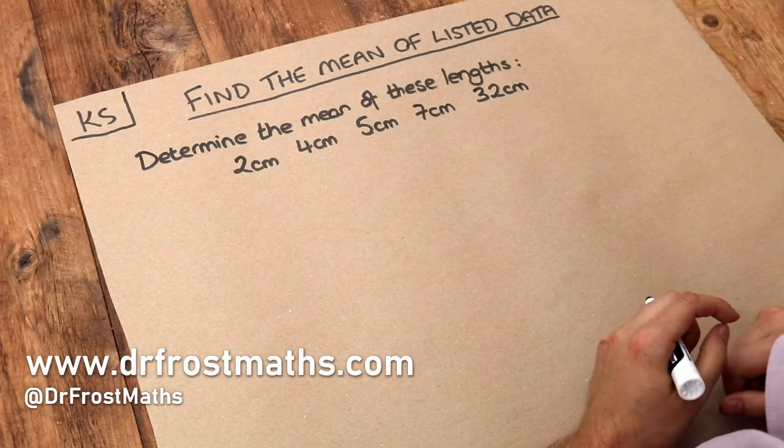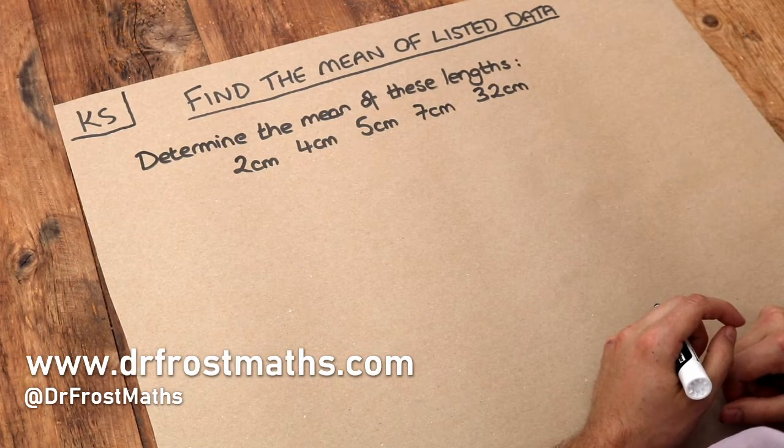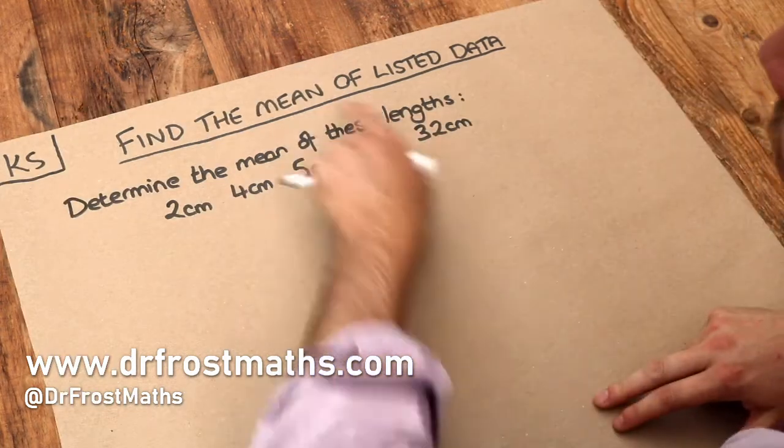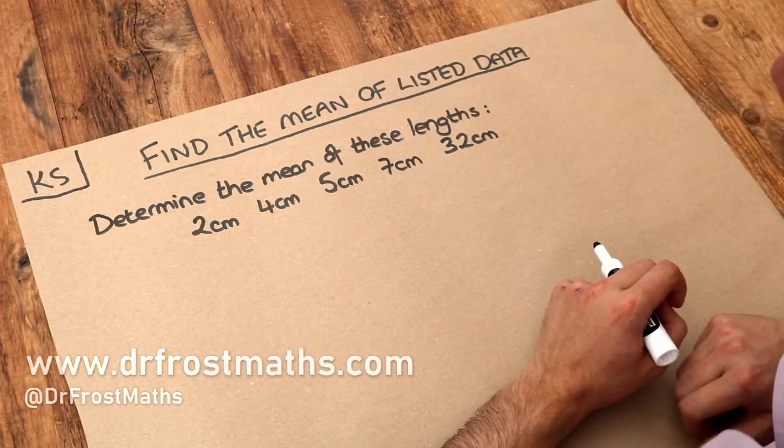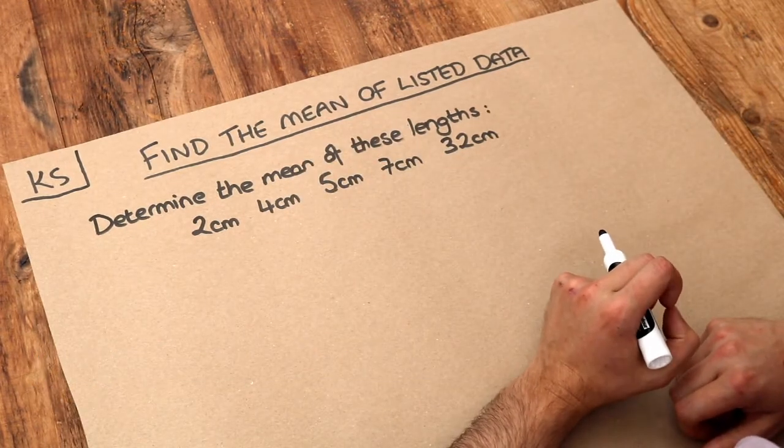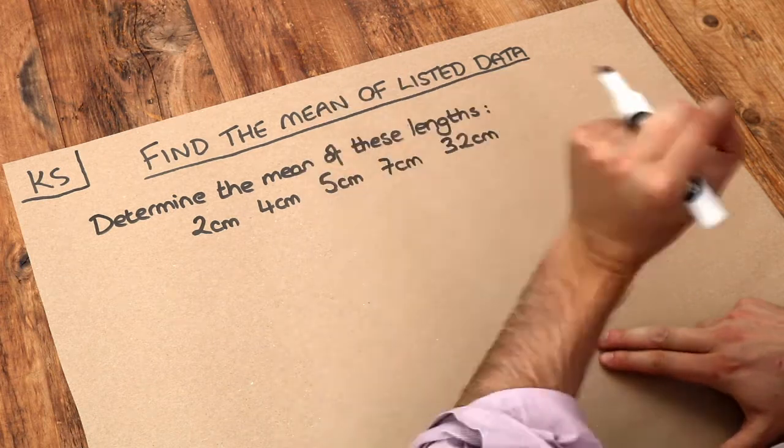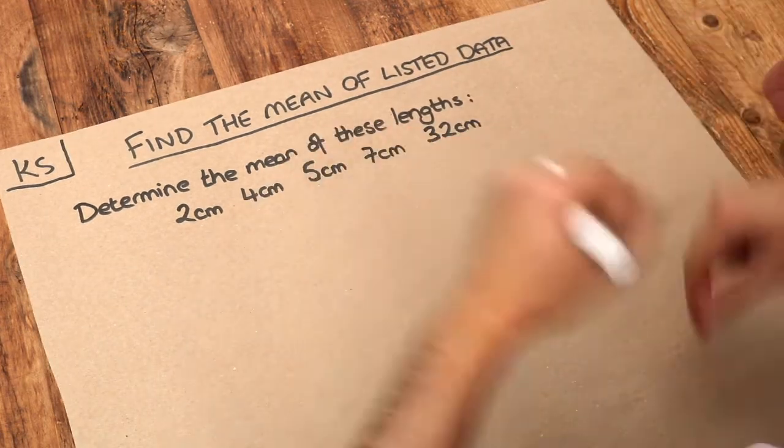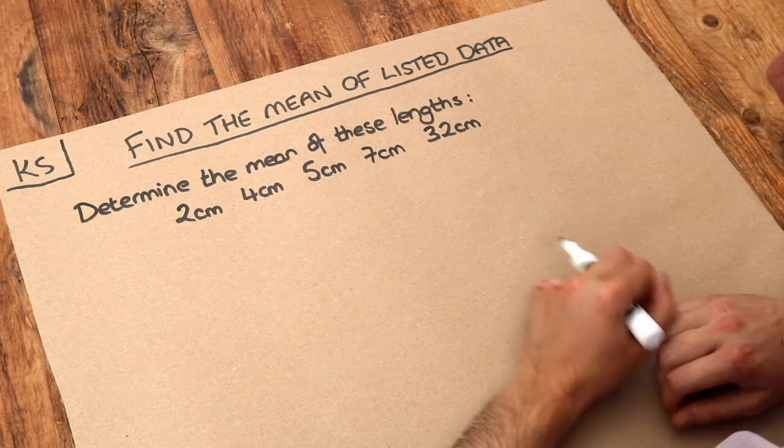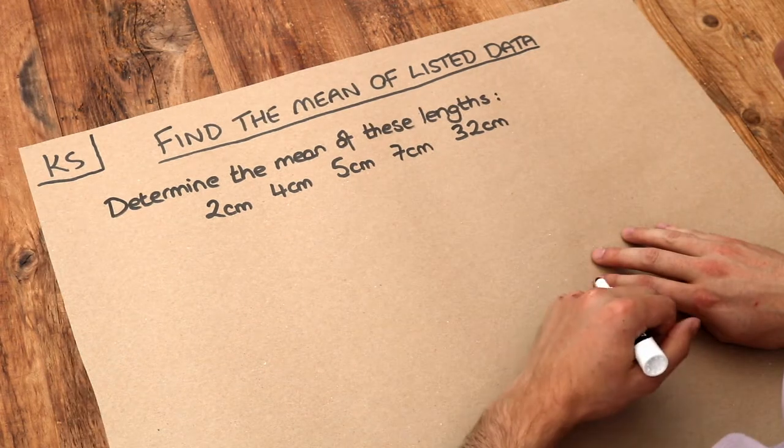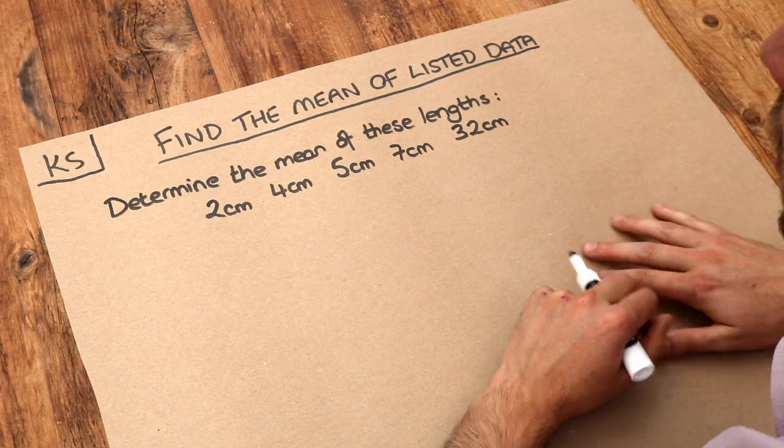Hello and welcome to this Dr. Frost Maths key skill video on finding the mean of listed data. Now the mean is an example of an average, and an average is when we want to use a single value to sum up all the values that's kind of representative of all those values. There's other types of average as well called the median and mode which we look at in other videos.